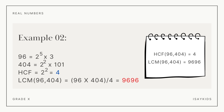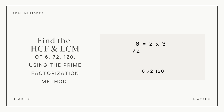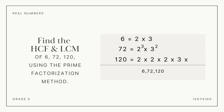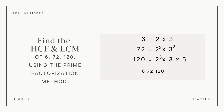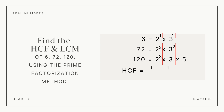Let's do one more — this time with three numbers. Find the HCF and LCM of 6, 72 and 120 using the prime factorization method. We have 6 equal to 2 into 3; 72 equal to 2 raised to the power 3 into 3 raised to the power 2; and 120 equal to 2 raised to the power 3 into 3 raised to the power 1 into 5. Here, common factors are 2 and 3, with smallest powers 2 raised to the power 1 and 3 raised to the power 1 respectively. Hence, HCF is 2 raised to the power 1 into 3 raised to the power 1, which is 6.